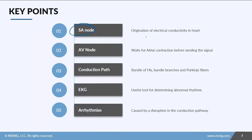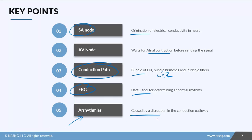To recap: the SA node is the origin of electrical conductivity in the heart. The AV node waits for atrial contraction before sending the signal down the conduction pathway, which is made up of the bundle of His, the left and right bundle branches, and the Purkinje fibers — which send the action potential out to the rest of the ventricle for ventricular systole. The EKG is an extremely useful tool for determining abnormal rhythms and abnormal conduction. Arrhythmias are caused by disruptions in the conduction pathway.